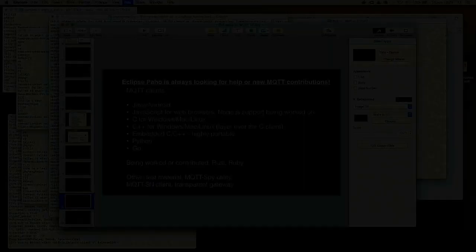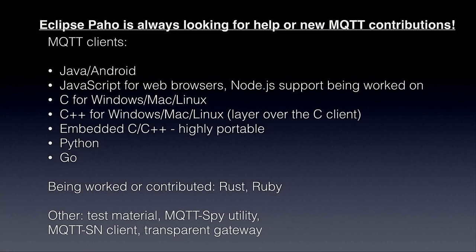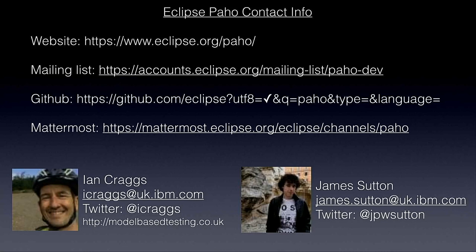Although Paho is a successful project, we're always looking for new contributions. If anyone is interested in working with us, get involved through the issues on any of the clients. We have clients for Java and Android, JavaScript, C and C++, Python, Go, and a new Ruby client that's just been contributed. Most other languages could use the Java client underneath if they run on the JVM, or the C client. Myself and James are the project leaders, and you can get in touch via the listed channels as well as through GitHub issues and repos.